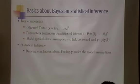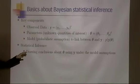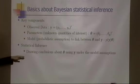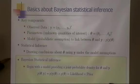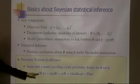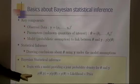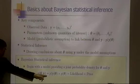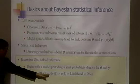There are two types of inference: classical and Bayesian. Bayesian statistical inference begins with a model providing the joint probability density of parameters and the data. This joint density of theta and y can be written as the probability density of y given theta — the likelihood — times the probability density for parameters.